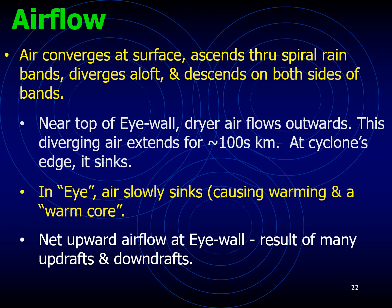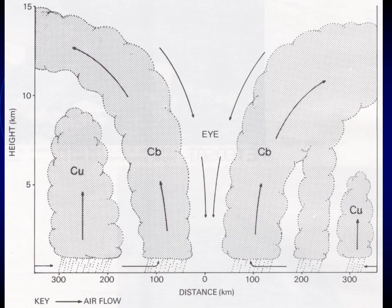The air converges at the surface, ascends through the spiral rain bands, diverges aloft, and descends on both sides of the band. The cloud formation around the eye wall takes place due to heavy cumulonimbus clouds, and the latent heat released from cloud formation and rain continues to fuel the tropical revolving storm throughout its journey.